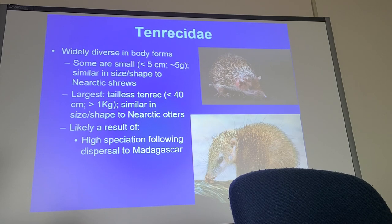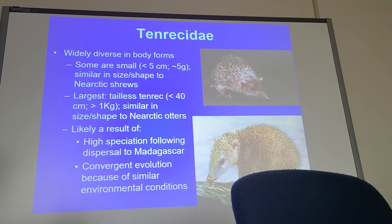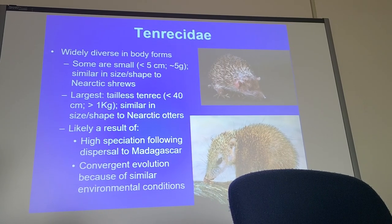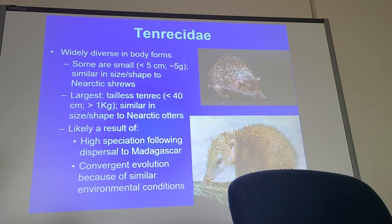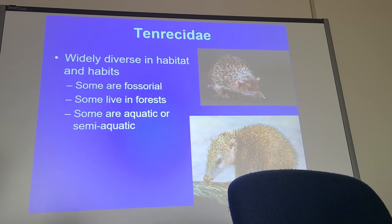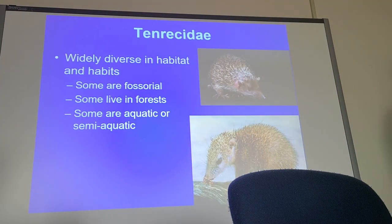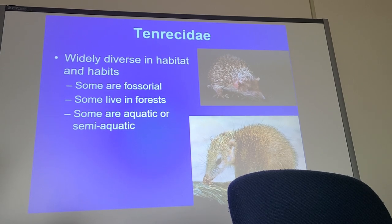This illustrates what happens when an area is colonized: founder populations arrive, there are plenty of niches to exploit, and you get speciation and adaptive radiation. Why do they look like other things? Convergent evolution. Unlike the Chrysochloridae, tenrecs show enormous habitat diversity — some are aquatic, some semi-aquatic, some live in forests, some underground, some above ground. It's a very interesting group.